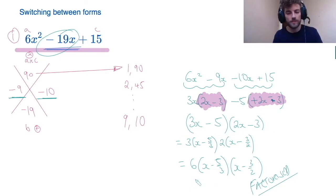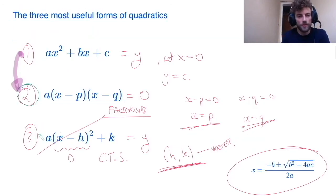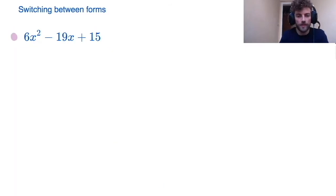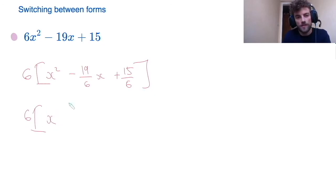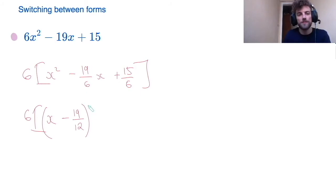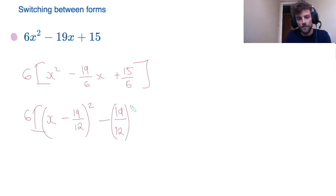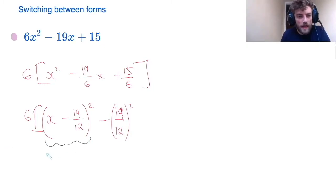Now let's look at how to go from form 1 to form 3 — the complete the square form. The first thing I need to do is ensure there is just a 1 in front of the x squared, so I'm going to factor out a 6. When I pull out a 6, I get x squared minus 19/6 x plus 15/6 inside the square brackets. Now I'm able to complete the square. I take half of the coefficient of x, which is minus 19/12, and form a bracket: x minus 19/12 squared.